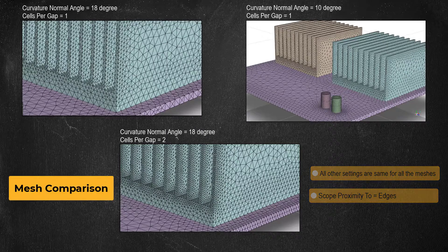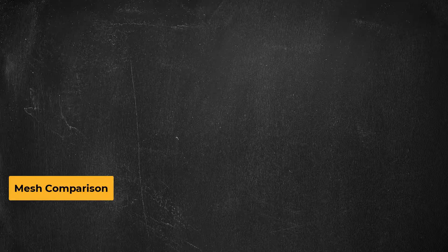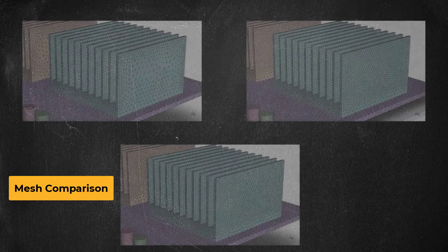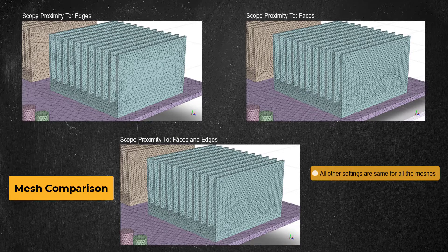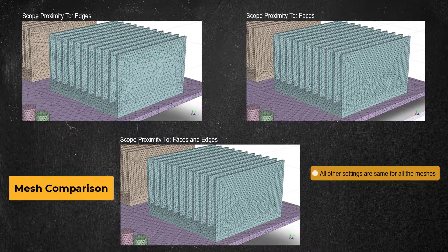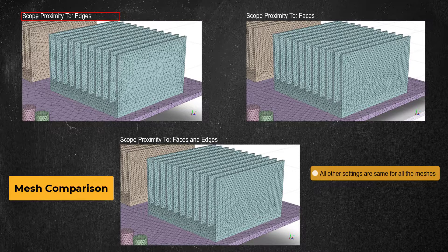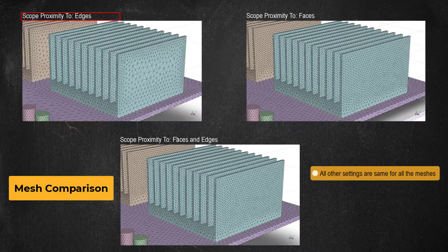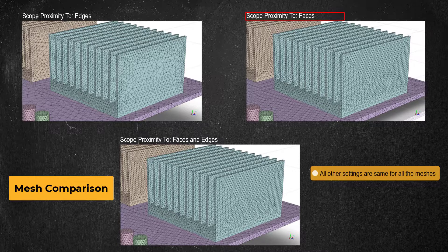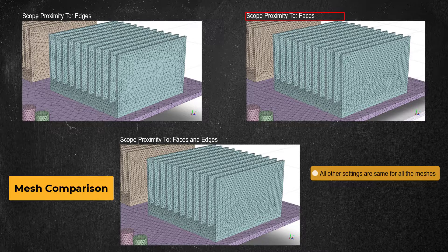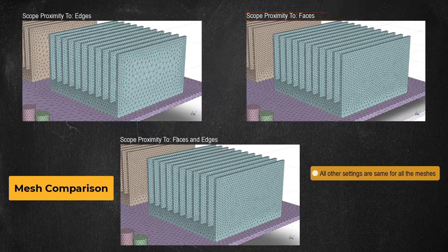Note that the scope proximity to was set to edges for both the meshes. To understand how this option influences the mesh distribution let's compare three more meshes. Here all the settings are identical among the three meshes except the scope proximity to option. It is set to edges for the mesh on the top left and considers only the edge to edge proximity and generates as many cells as prescribed only between two edges. When scope proximity to is set to faces, as done for the mesh on the top right, only a face to face proximity is considered and the appropriate number of cells are generated wherever such face to face gaps are encountered. This setting results in a higher number of cells when compared to just the edges input.